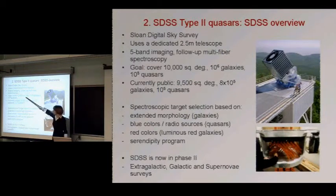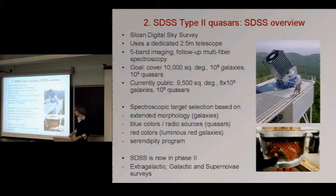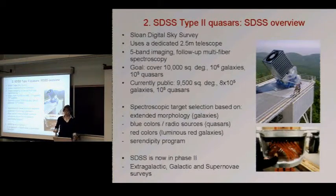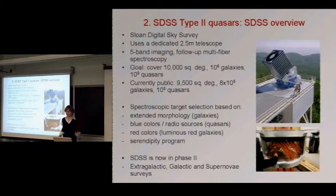The original goal was to cover 10,000 square degrees — basically a quarter of the sky — and get spectra of a million galaxies and 10^5 quasars; currently the public data release is roughly that number. The spectroscopic target selection is based on photometric properties like extended morphology and colors. They want to follow up faint radio sources, blue sources because many are quasars, and red sources because many are luminous red galaxies. They also have a serendipity program targeting objects with unusual colors, unusual multi-wavelength properties, or radio or X-ray emission.